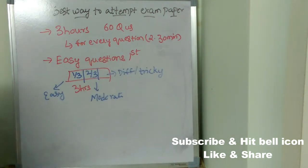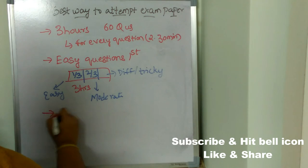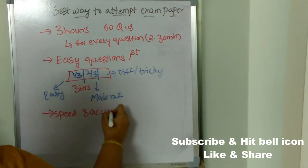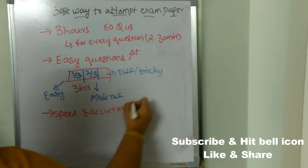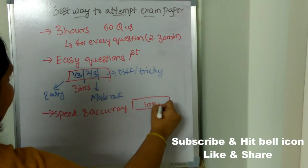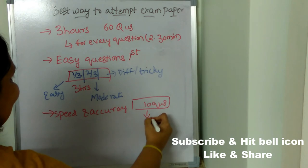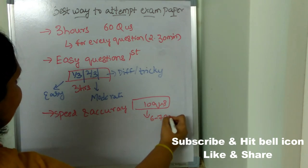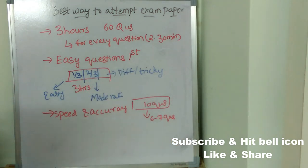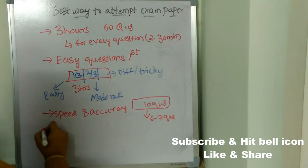Next important thing is speed and accuracy. Both speed and accuracy are important. For example, if you are solving 10 questions, at least six to seven questions must be right. They must be correct. It's really important to go for accuracy.